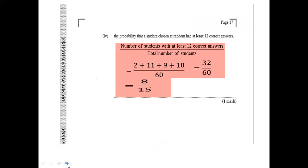The second part of question 5 asks for the probability that a student chosen at random had at least 12 correct answers. From the data, the number of students with at least 12 correct answers are 2, 11, 9, and 10 — giving a total of 32. We divide 32 by the total number of students, 60, and simplify to get 8 over 15. That's the probability, worth 1 mark.